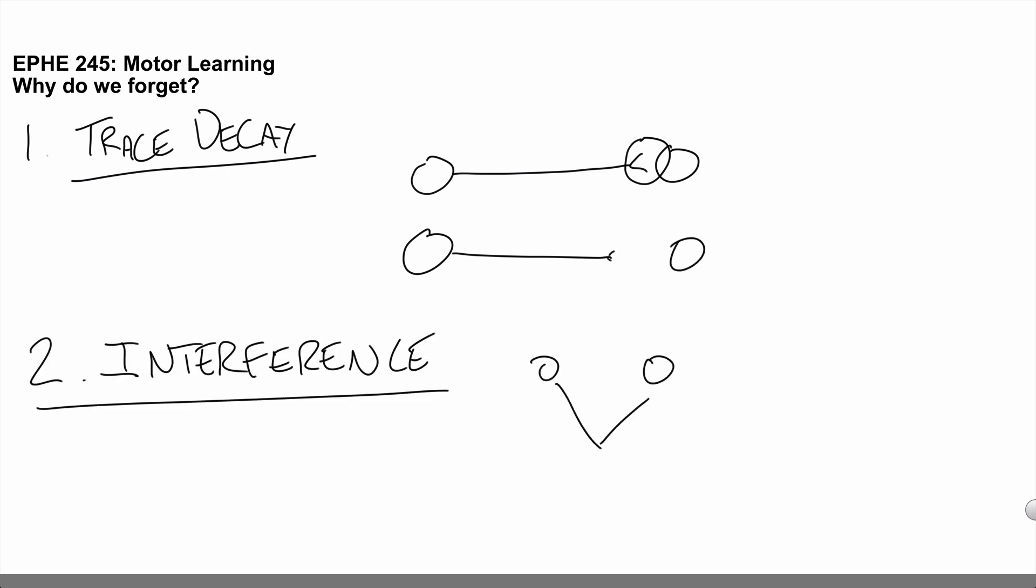The second key theory about forgetting is the interference theory. The interference theory simply posits that if you've got a whole bunch of neural connections and you can imagine a bunch of neurons being interconnected throughout the brain,